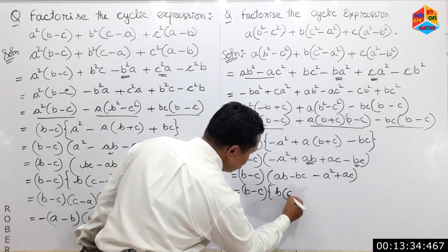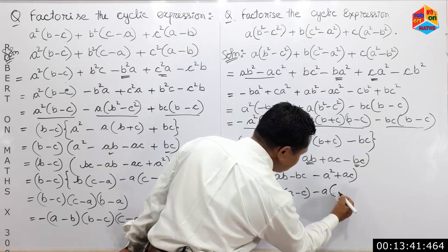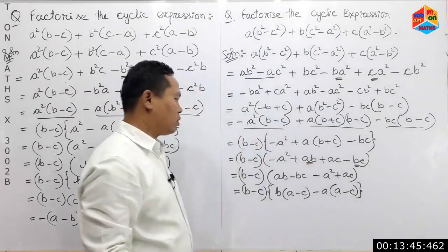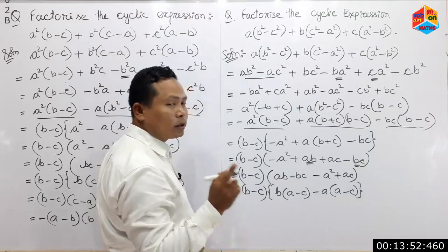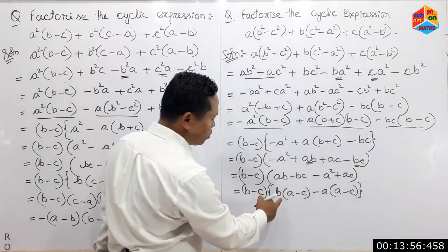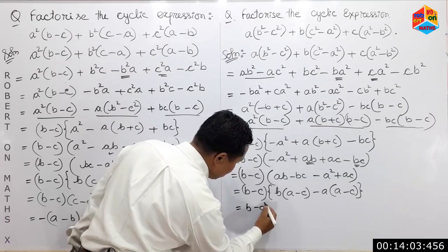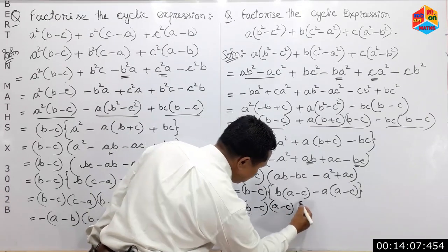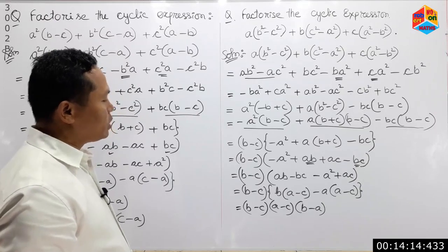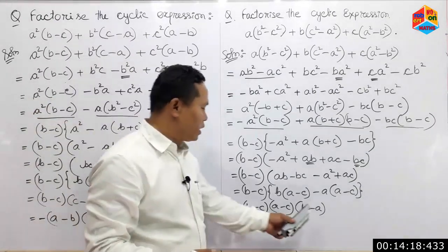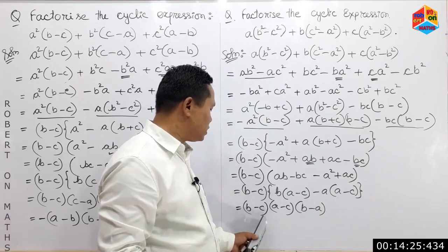This is equal to a(b minus c). If we add a, then minus c is equal to minus a minus c. Step 3 is equal to minus a times (b minus c). So b minus c equals a minus c. So: a minus b, b minus c, c minus a — this is the first step factorization.